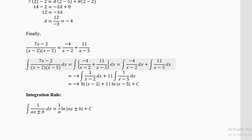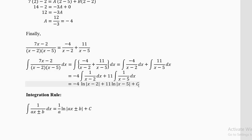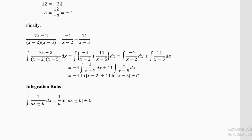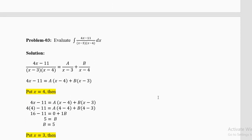The partial fractions are −4/(x − 2) plus 11/(x − 5). Integrating: −4 times integral of 1/(x − 2) dx plus 11 times integral of 1/(x − 5) dx gives −4 ln|x − 2| + 11 ln|x − 5| + C. Copy the numbers carefully — any mistake in the partial fractions will carry into the integration.